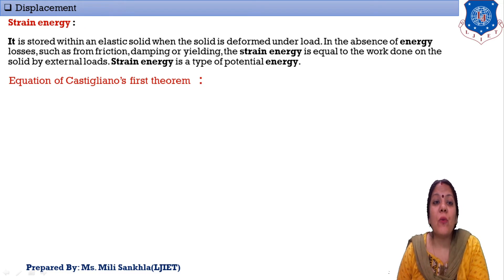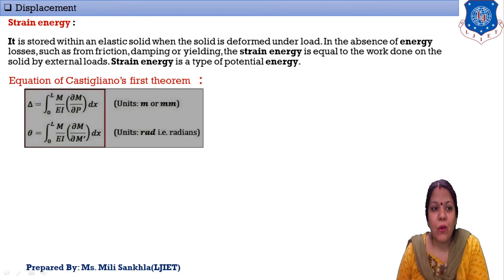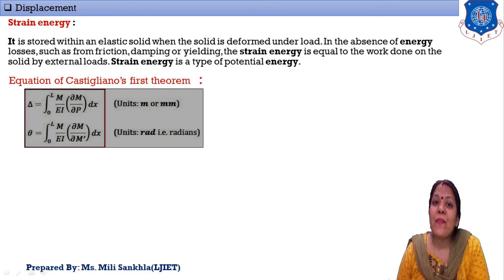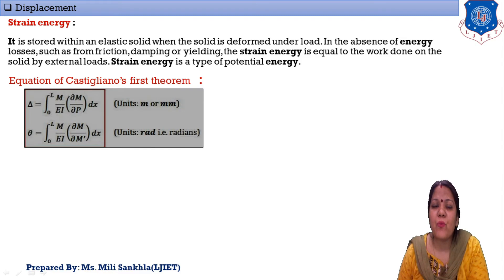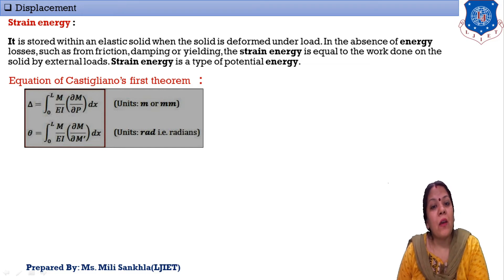The equations of Castigliano's First Theorem are: delta = integral from 0 to L of (M / EI) multiplied by (∂M / ∂P) dx, giving deflection in millimeters or meters. Theta = integral from 0 to L of (M / EI) multiplied by (∂M / ∂M_x) dx, giving slope in radians, which can also be expressed in degrees.